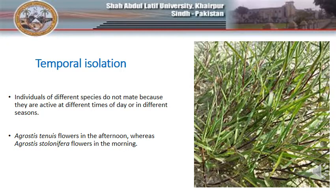For example, flowers may grow in the same area, but one blooms and releases pollen in May while the other blooms later. Since the flowers do not reproduce at the same time, they cannot cross-pollinate. Over time, the two groups can split off into two new species which can no longer interbreed.